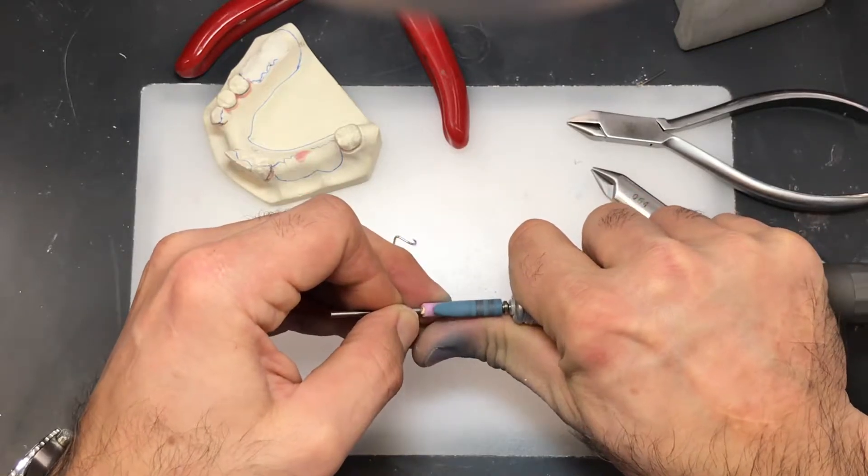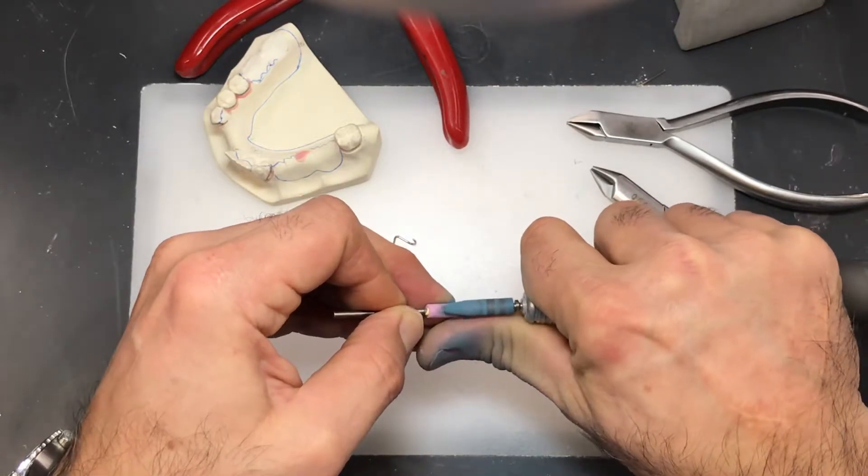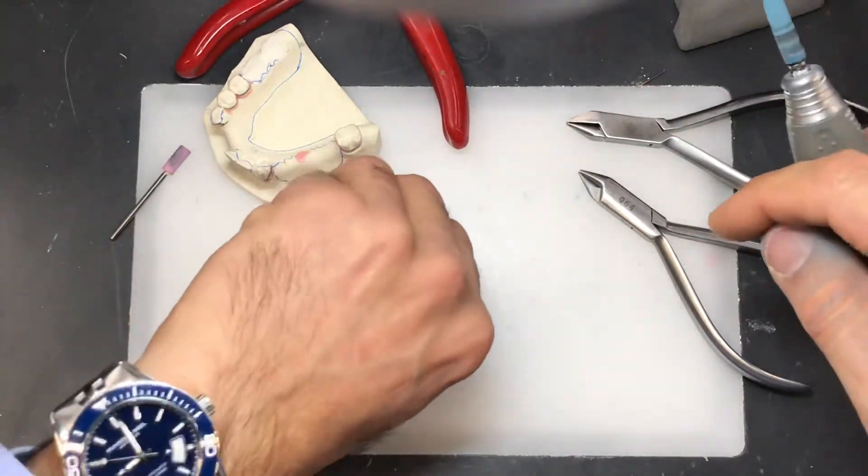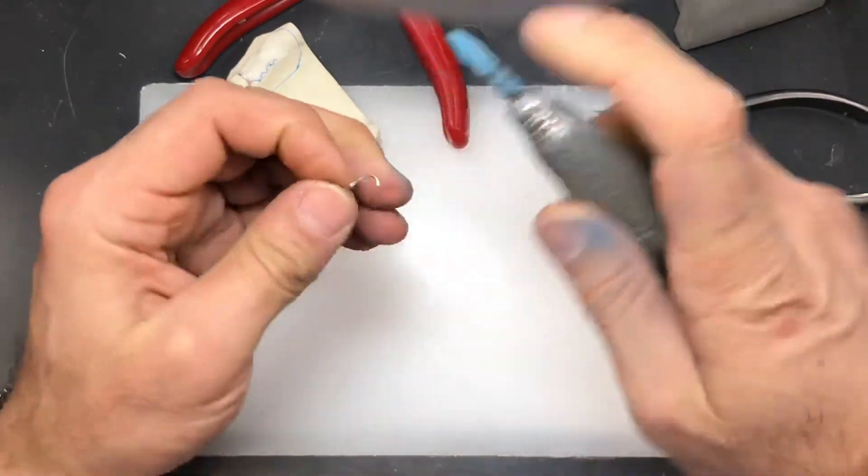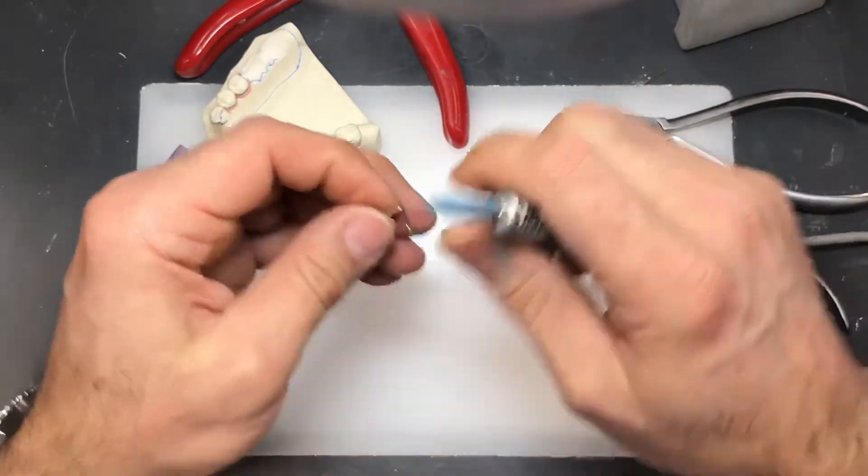Kind of smooth it out a little bit and you can even taper it a little bit so it's a little more ideal of a shape to fit inside the wire.